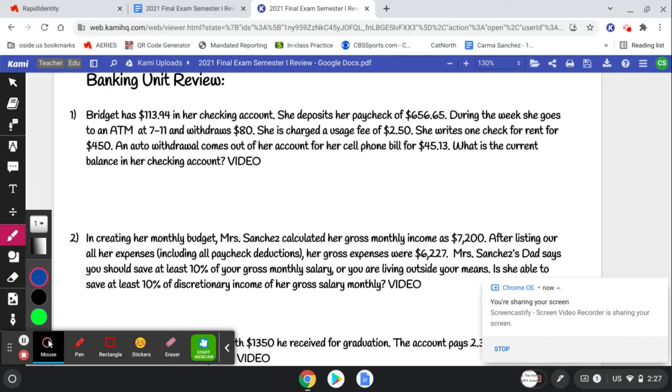Bridget has $113.94 in her checking account, and she deposits her paycheck of $656.65. During the week, she goes to an ATM at 7-Eleven and withdraws $80. She's charged a usage fee of $2.50. She writes one check for rent for $450. An auto withdrawal comes out of her account for her cell bill for $45.13. What is her current balance in her checking account?